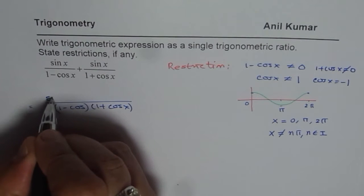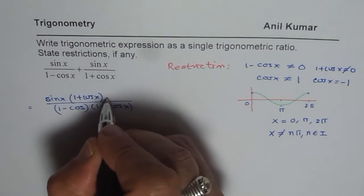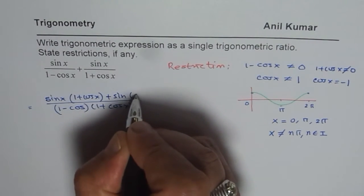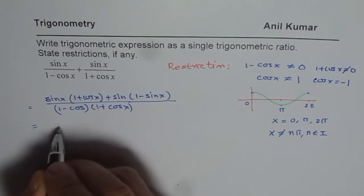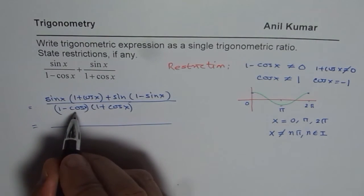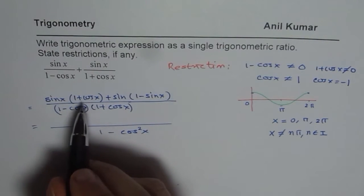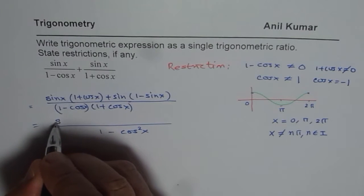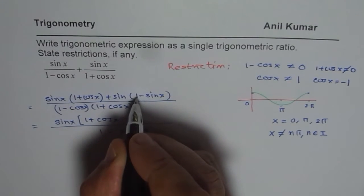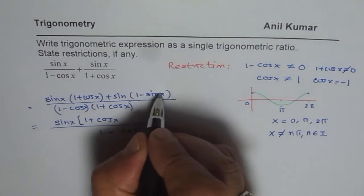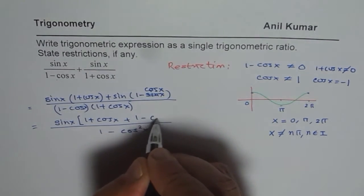The first term, sin x, gets multiplied by 1 plus cos x, and the other term gets multiplied by 1 minus cos x. The denominator is 1 minus cos x times 1 plus cos x, which equals 1 minus cos squared x. In the numerator, we take sin x common and get 1 plus cos x plus 1 minus cos x.